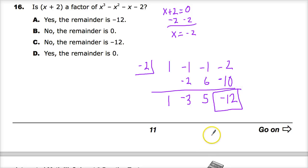And there's my remainder, negative 12. So, is it a factor? No, because it has a remainder. So the answer to number 16 is C.